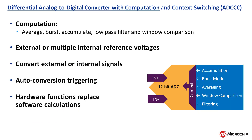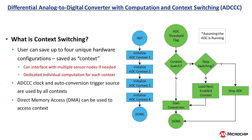The computation feature allows the ADC to perform various post-conversion computations on its results, such as averaging, filtering, window comparisons, and accumulation. This reduces code size by leveraging the hardware inside of the ADC. Context switching allows users to easily interface with multiple sensor nodes by allowing the user to save up to four unique hardware configurations for the ADC, allowing for dedicated individual computations for each context. Whenever a specific context is selected, the conversion occurs with that context's configuration applied.